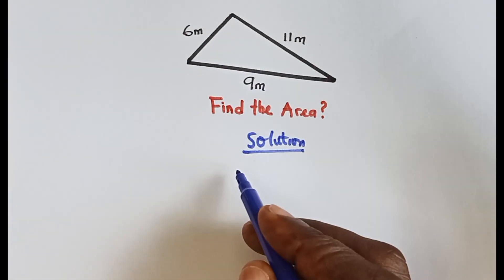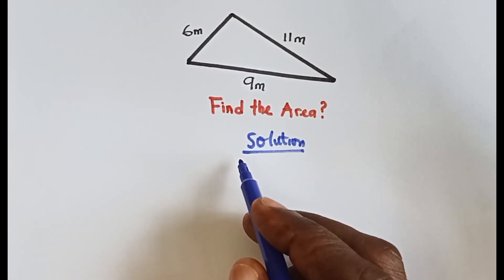This triangle is a scalene triangle. It has all the sides to be unequal, so we are not going to use half base times height because the vertical height is not given and we don't have any angle.